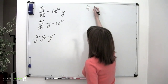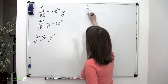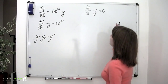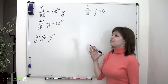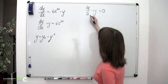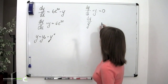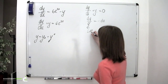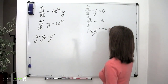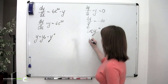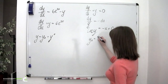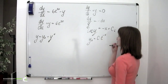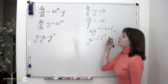So we'll go dy over dx plus y equals 0. It is a differential equation with separable variables, so it can be easily solved. We go dy over y equals negative dx. Integrating both sides we obtain ln y equals negative x plus the constant, or y₀ equals the constant times e to the power of negative x.